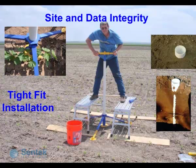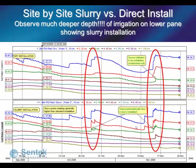The installation of the access tube has to be done with great care to prevent any preferential path flow of water going along the tube. We use a direct-fit installation where we drill inside the access tube, which is fitted with a sharp cutting edge at the bottom, then hammer it in and re-insert the auger — that process continues until the whole access tube is installed. We don't use slurry in conventional situations because the depth of irrigation in slurry goes much further than normal, altering the picture of reality of what actually happens with a wetting front in the soil, making it dangerous to rely on for irrigation management decisions.